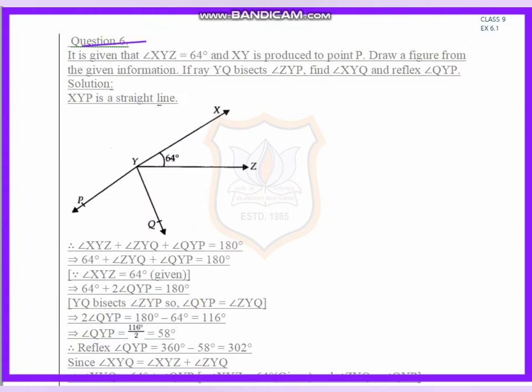Question number 6. It is given that angle XYZ equals 64 degrees and XY is produced to point P. Draw a figure from the given information. Ray YQ bisects angle ZYP, and we have to find angle XYQ and the reflex of angle QYP.